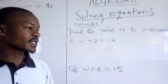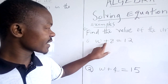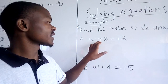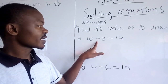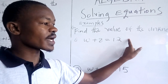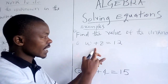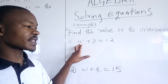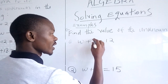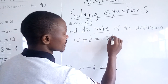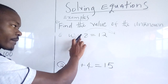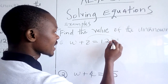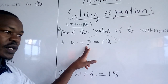One thing that you have to know is that the sign, the moment it crosses the equal sign, it will change. If it is a plus — a positive sign — and it crosses the equal sign, it will change to a negative sign. Meaning, if it is a plus and it crosses the equal sign, it will be a minus. So, for us to find the value of W, we are going to collect the like terms, take the whole numbers to the other side.